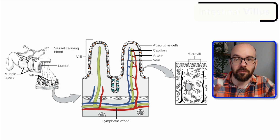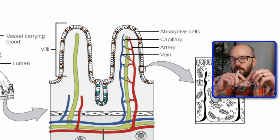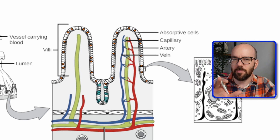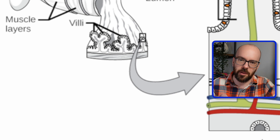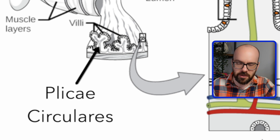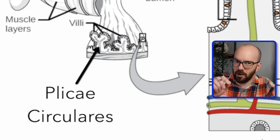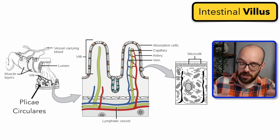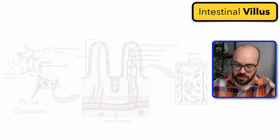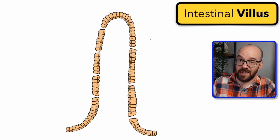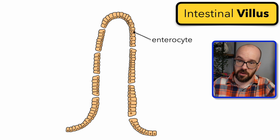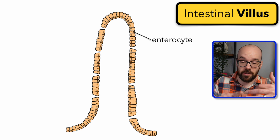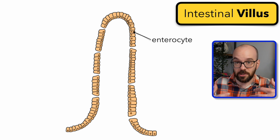We're going to start with an intestinal villus — the little tiny folds on the lining of the small intestine. The main folds you can see in the lining are the plicae circularis. These smaller folds sit on top of those bigger folds. This is also where absorption occurs. The villus is mainly made of enterocytes, or absorptive cells, that are going to absorb molecules — whether carbohydrates, lipids, or proteins — that we digest from our food.